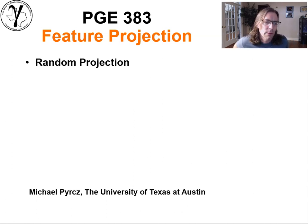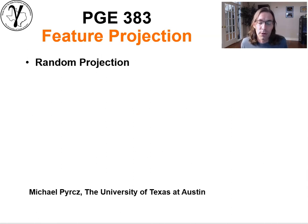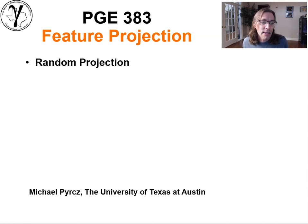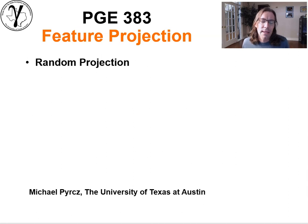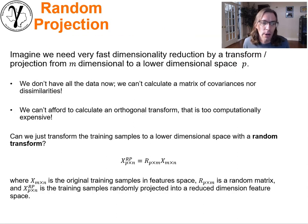Howdy everyone. I'm Michael Perch. I'm an associate professor at the University of Texas at Austin and I'm going to finish up the discussion around feature projection. We've already covered principal components analysis. We've covered multidimensional scaling. And let's finish up with what I think you will find is a pretty fascinating topic of random projection and how it could be applied to massive multivariate or high-dimensional settings in machine learning.